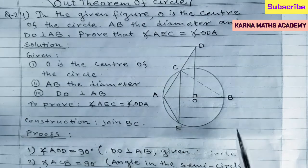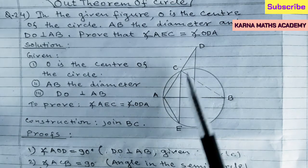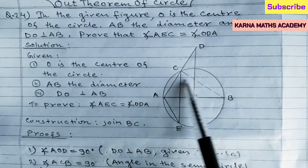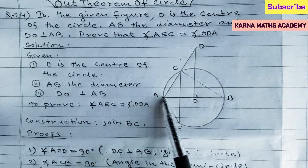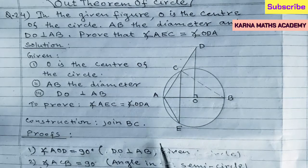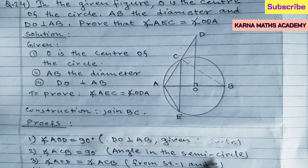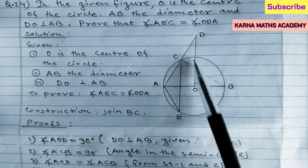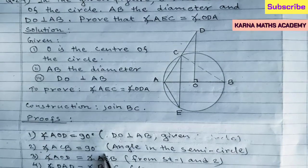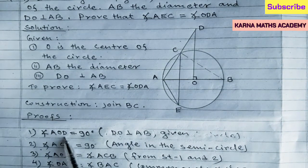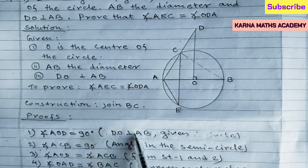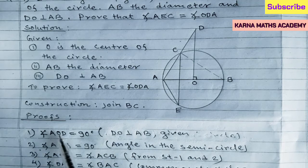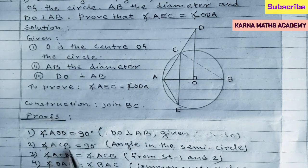Then we take angle ACB is equal to 90 degrees. Angle ACB is the angle in the semicircle, which is subtended by the diameter AOB. As we know, the angle in a semicircle is always a right angle. So angle ACB equals 90 degrees. After combining statements one and two, we get angle AOD is equal to angle ACB.